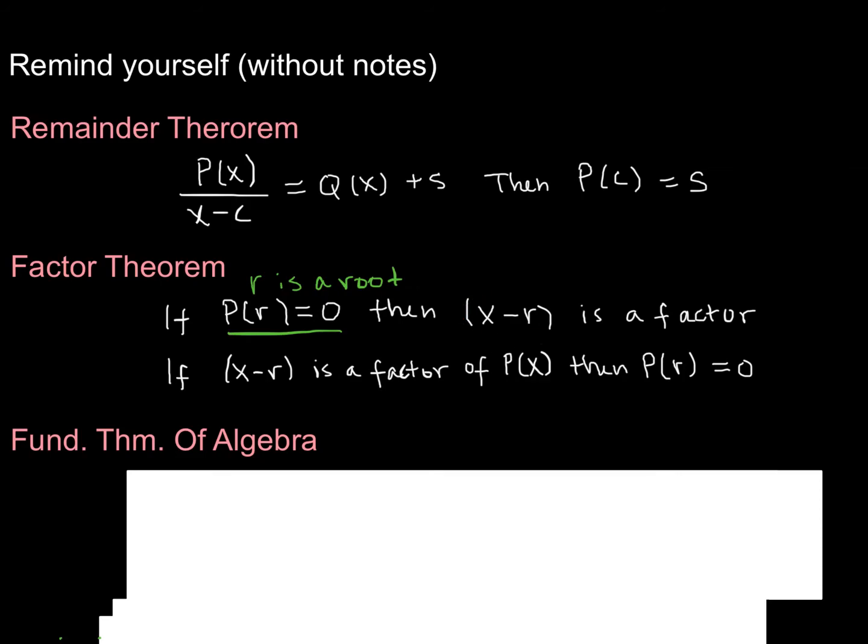because if you write out in factored form, you're going to have all these factors multiplied together. And when you set it equal to 0, one of them has to be equal to 0. And so for that particular value, r, the linear factor that will be equal to 0 is x minus r.